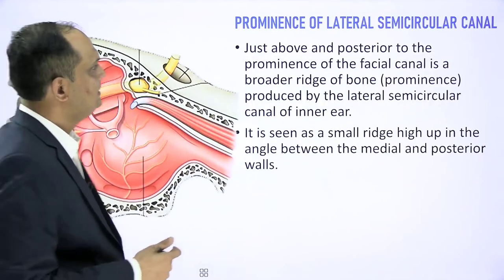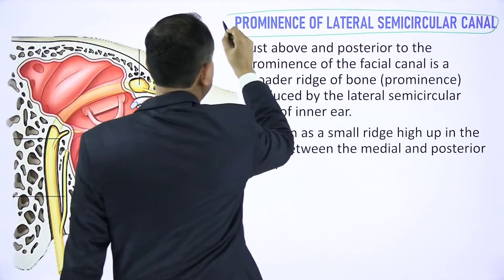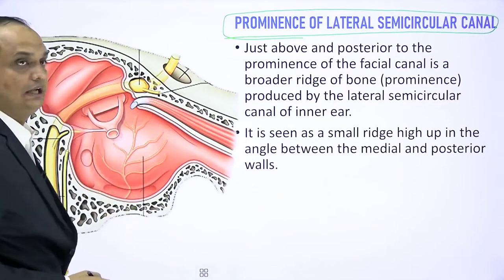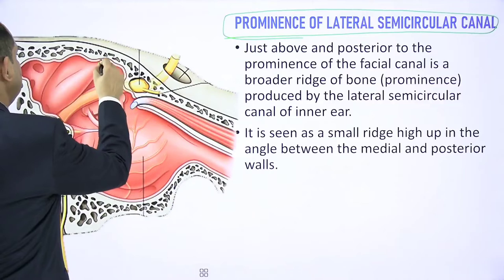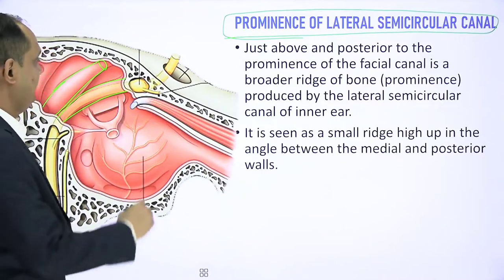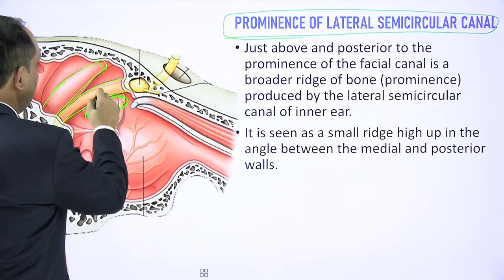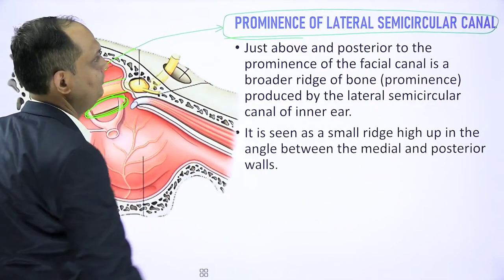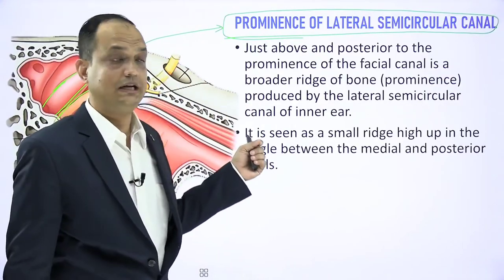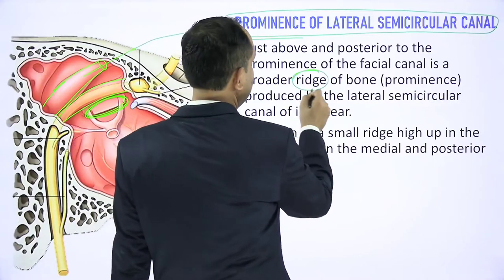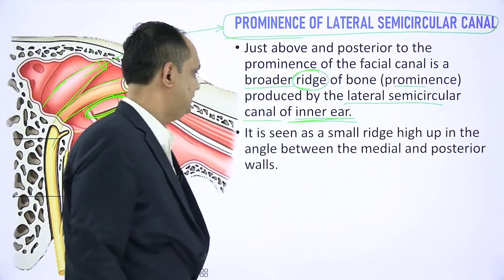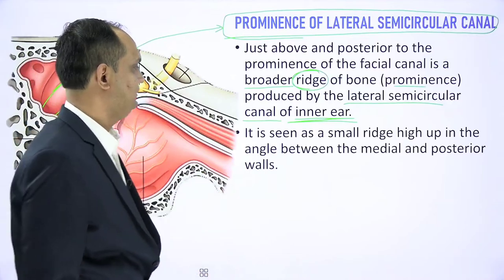The prominence of the lateral semicircular canal is present above the facial canal. For image-based questions: the prominence of the semicircular canal is above, the prominence of the facial canal is just above the oval window, and above the facial canal is the ridge produced by the lateral semicircular canal. Just above and posterior to the prominence of the facial canal, a broad ridge or prominence is produced by the lateral semicircular canal — a feature of the inner ear seen as a small ridge high up in the angle between the medial and posterior walls.